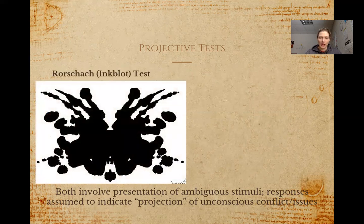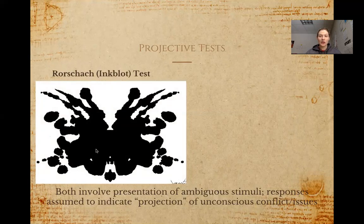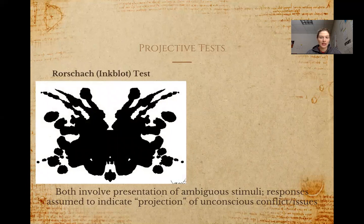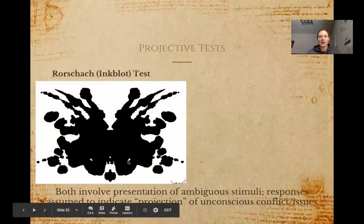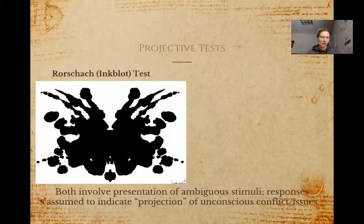One of the more famous projective style tests is the Rorschach inkblot test, developed by Herman Rorschach in the 1920s. You present an inkblot slide to a patient and ask them to explain what they see in the image. The idea is that the types of things people report seeing in the inkblots reflect aspects of their personality that may be unconscious to them. For example, someone who harbors paranoid ideation might consistently report seeing eyes staring back at them from the inkblots, without realizing this reveals something about their personality.